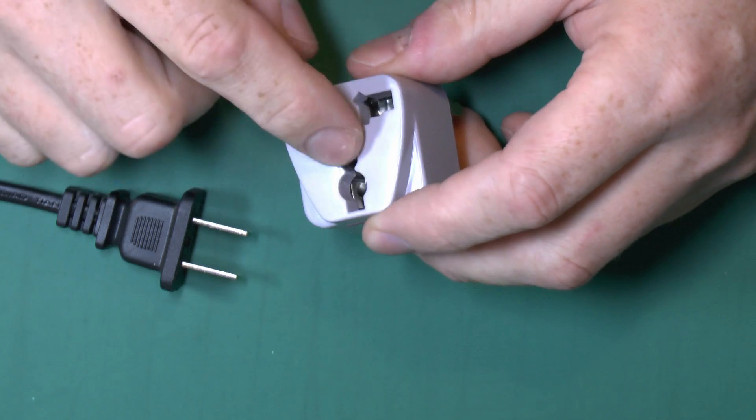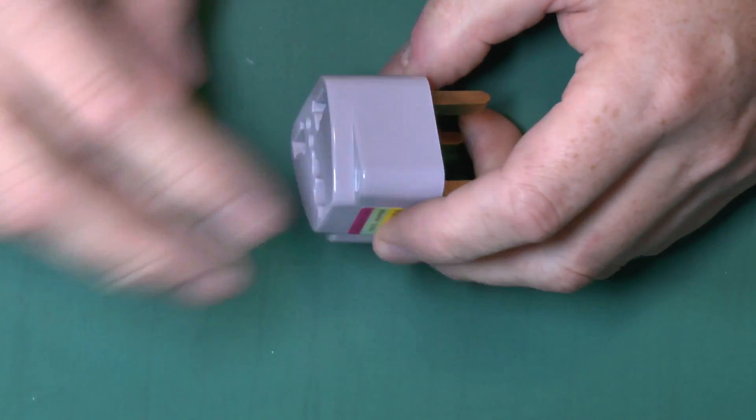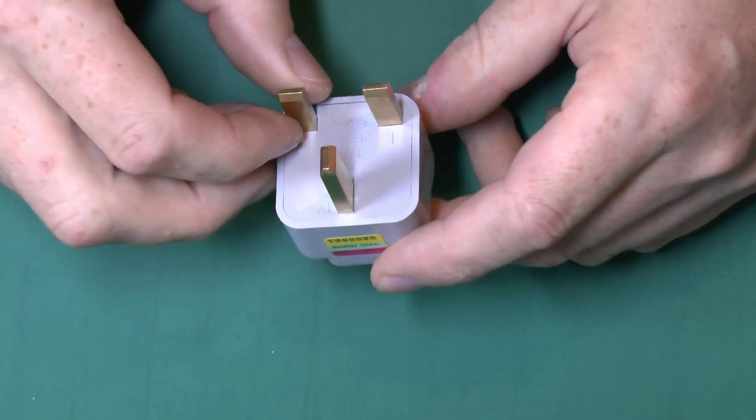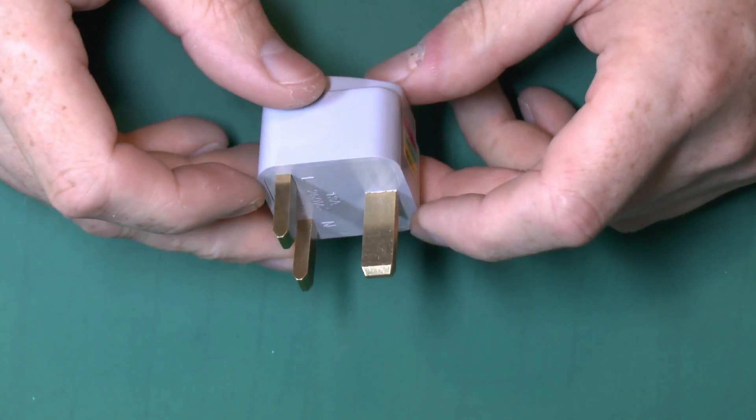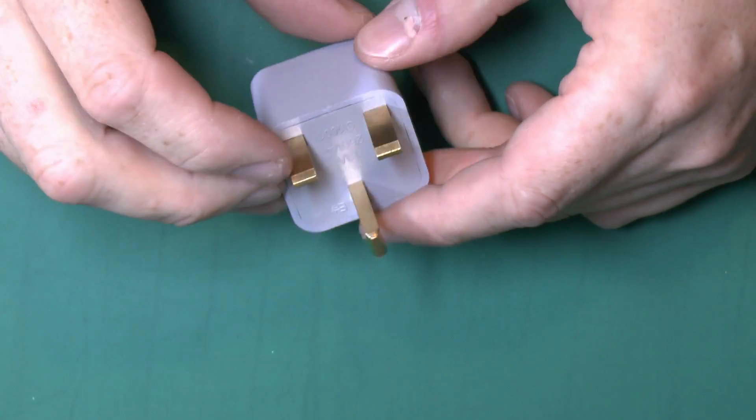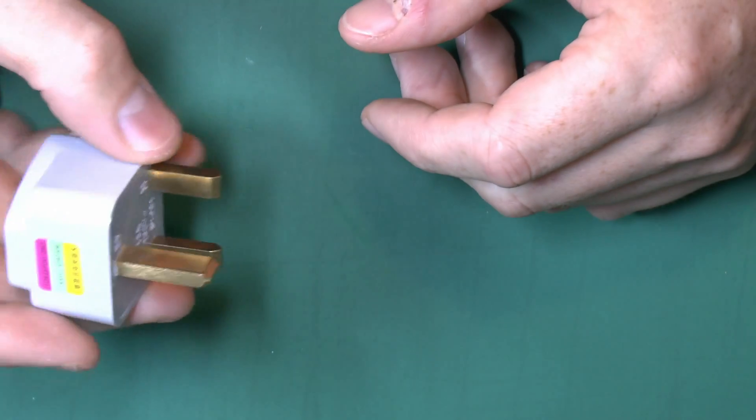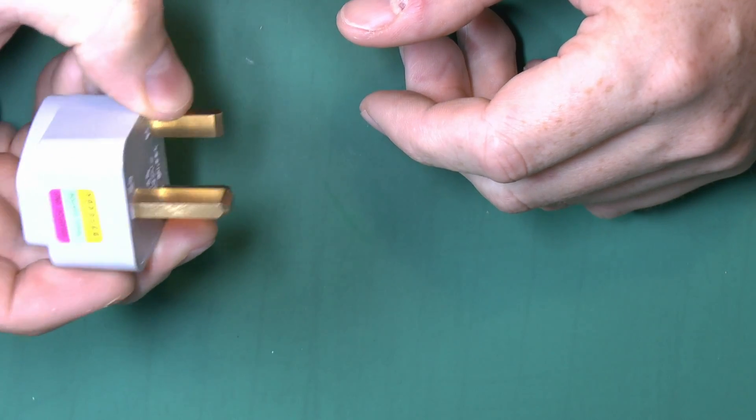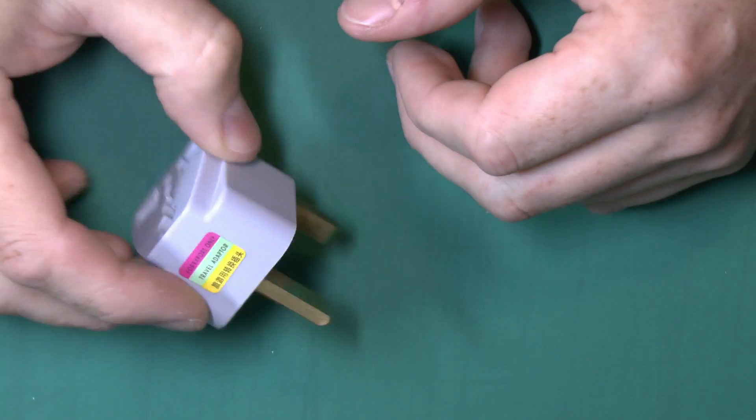This does have the facility for an earth there. Problems with this, of course, on this side, these pins are completely unsleeved. So if you grip this and put it in the wall like that, and your fingers come round the corner, then you've just killed yourself.